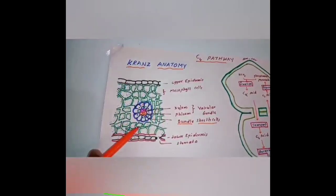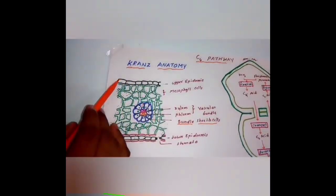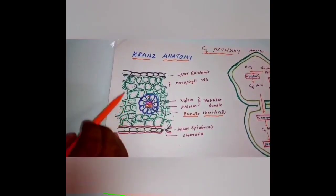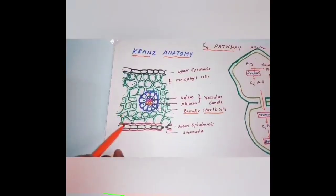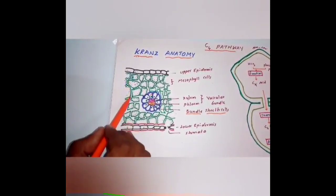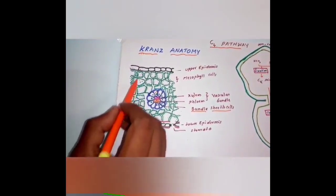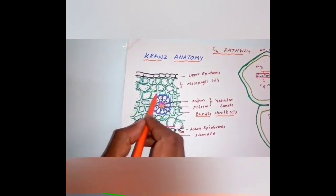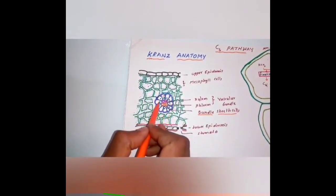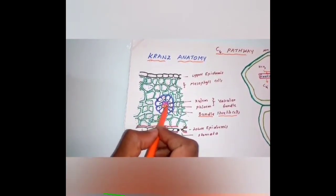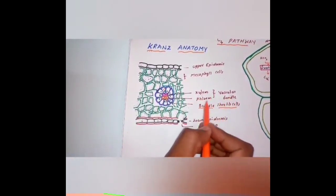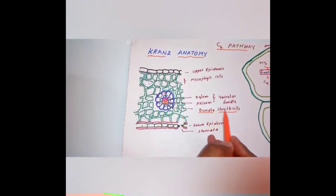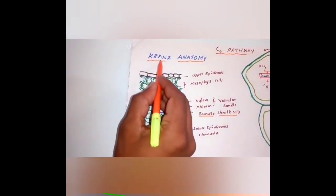In the leaf anatomy, small differences are there. There is an upper epidermis and lower epidermis. In between upper and lower epidermis, there are mesophyll cells present. In the mesophyll cells, a greater amount of chloroplast and chlorophyll is present. In the center of the leaf there is xylem and phloem, together called the vascular bundle. Along with the vascular bundle, there are specially modified cells called bundle sheath cells.